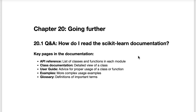Let me now summarize the five pages and page types we walked through, and describe how I use them. The first page is the API reference — I go here when I want to see what classes or functions are in a particular module, for example to review everything available for preprocessing. The second page type is the class documentation — I go here anytime I need to understand a particular class in depth, especially all of its parameters and attributes.